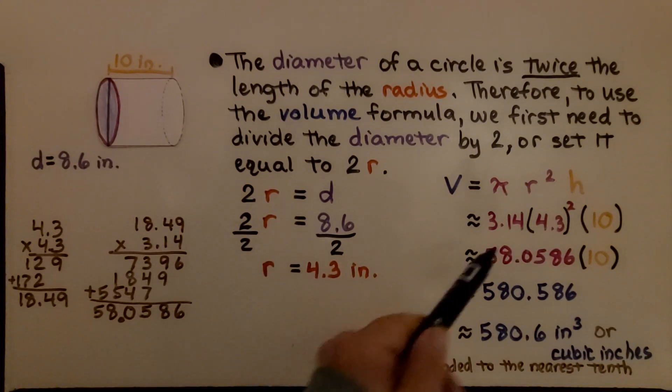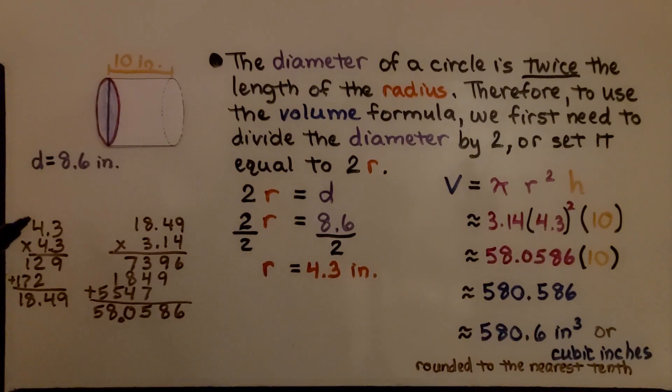We need to square that 4.3 times 4.3 is 18.49. We multiply that by the 3.14 and we get 58.0586.